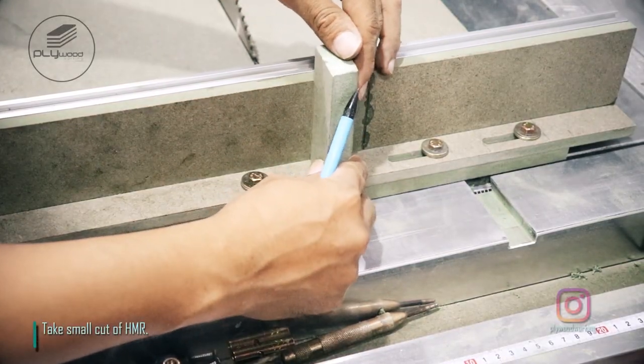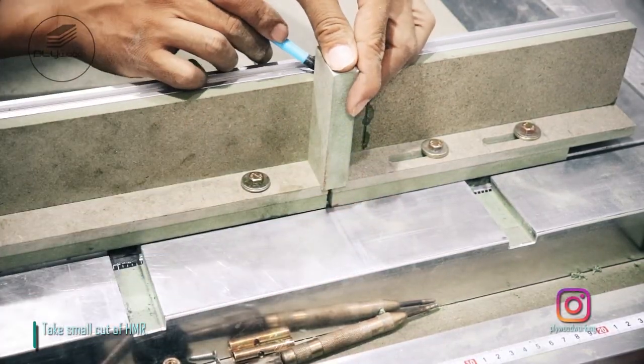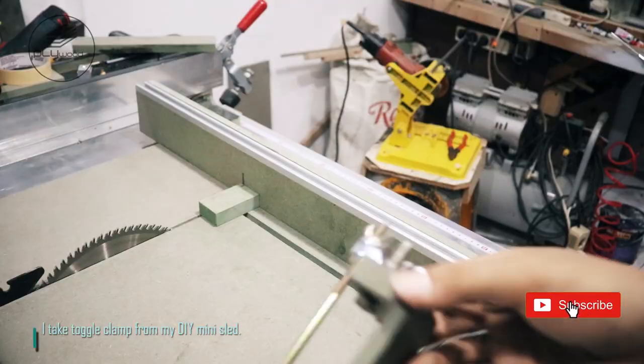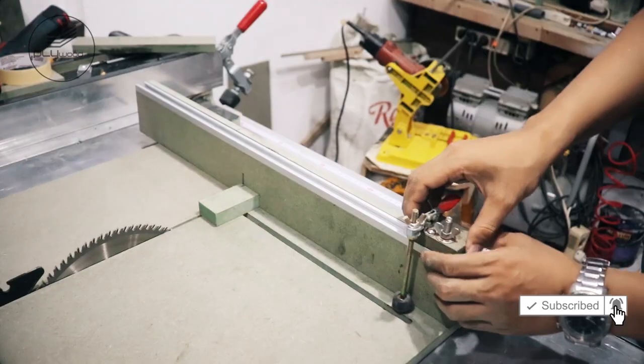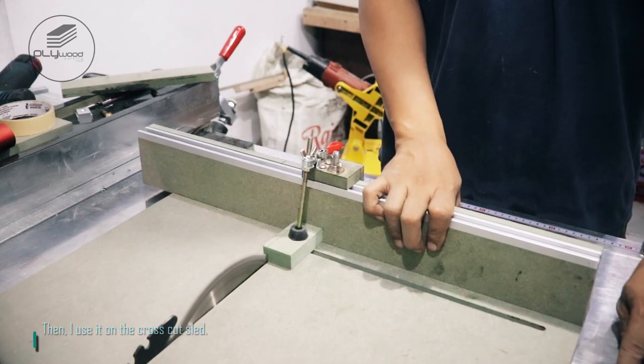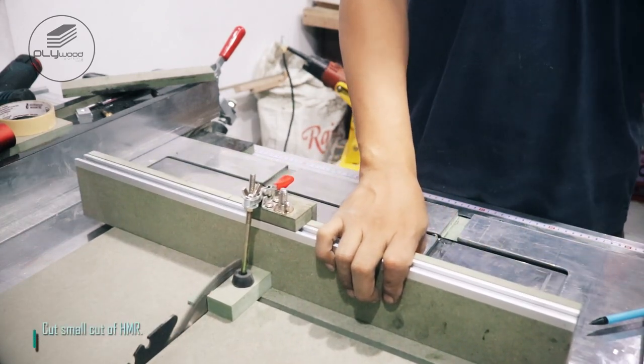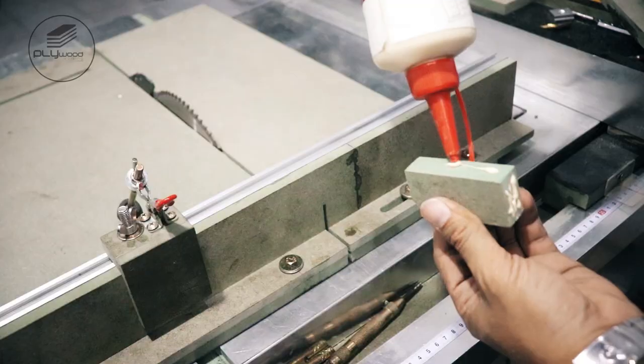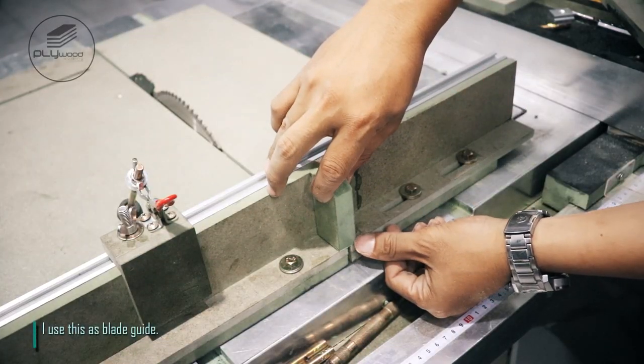Take small cut of HMR. I take toggle clamp from my DIY mini sled. Then, I use it on the cross cut sled. Cut small cut of HMR. I use this as blade guide.